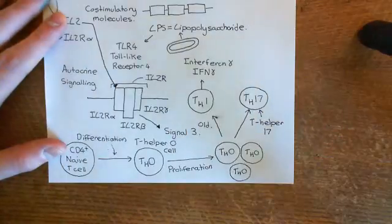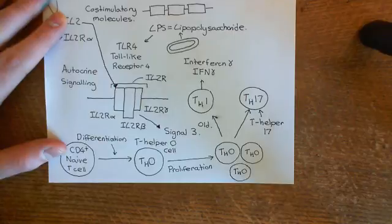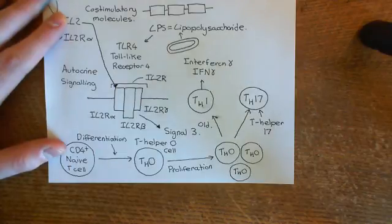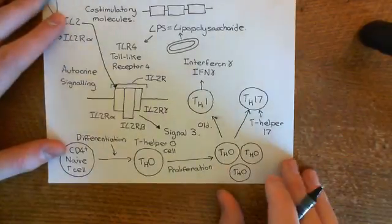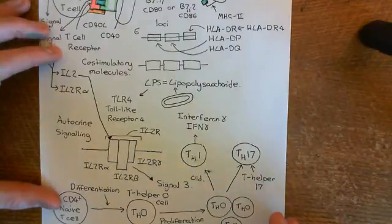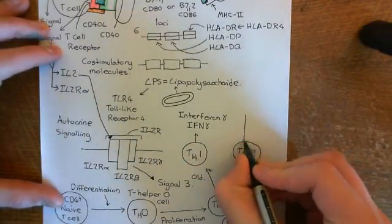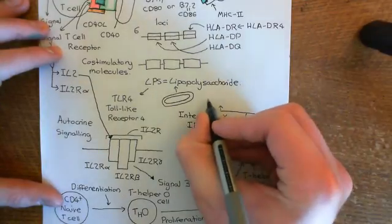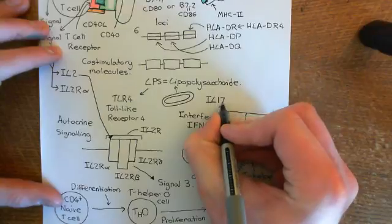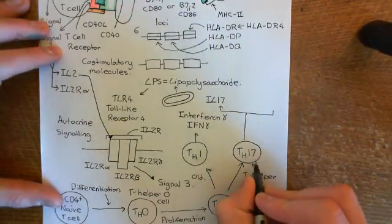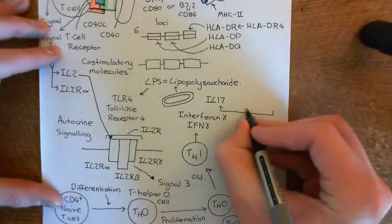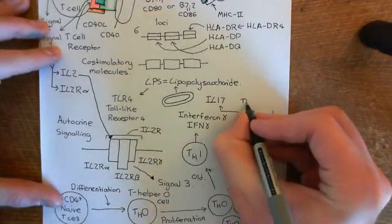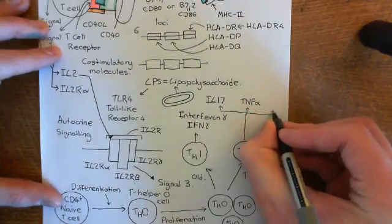You end up with a huge number of these T-Helper 17 cells in the synovial membrane and also in the synovial fluid of the synovial joint. These T-Helper 17 cells secrete a number of very powerful cytokines, including large amounts of interleukin-17, which is the main cytokine that T-Helper 17 cells secrete — that's the origin of their name.